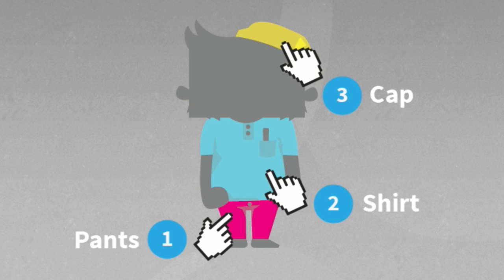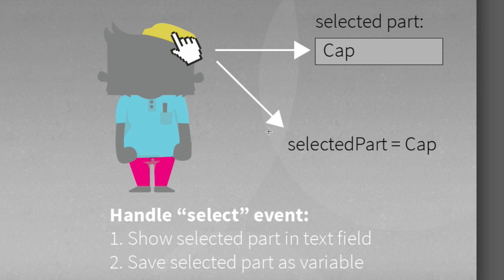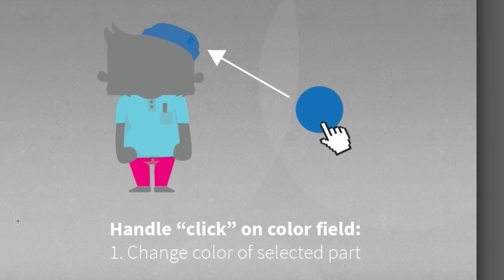Whenever the user clicks on one of these hotspots, two things should happen. First, the selected part should be displayed in a text field. Second, we want to save the selected part in a variable so we can use it in the final step. For example, when the user clicks on a color field such as this blue circle, the selected part saved in the variable should change the color accordingly.